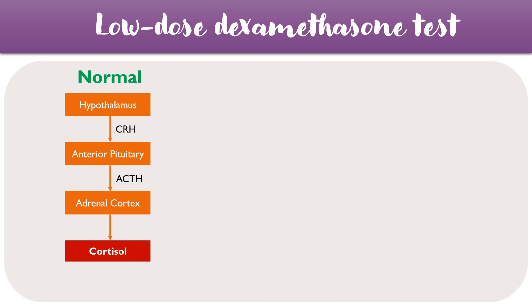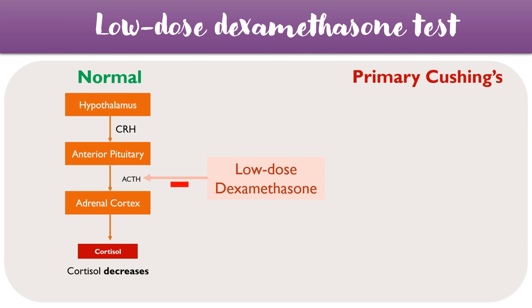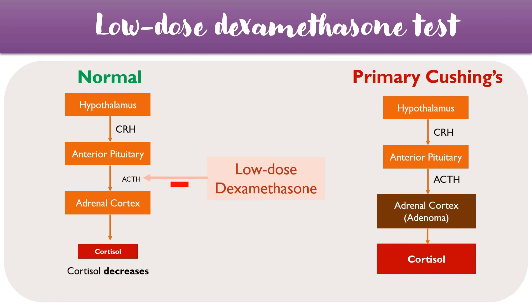Looking at the low-dose dexamethasone test first, with a normal HPA axis, when we inject low-dose dexamethasone, ACTH should go down and cortisol should also decrease in a normal patient. In primary Cushing's syndrome, where there's a problem with the adrenal cortex such as an adenoma, when we inject low-dose dexamethasone, the ACTH does go down, but the cortisol remains high, because the problem is below the level of ACTH — further down the axis.